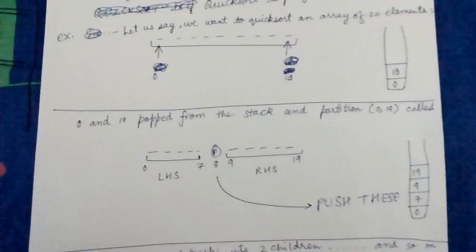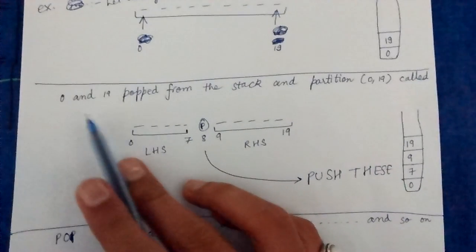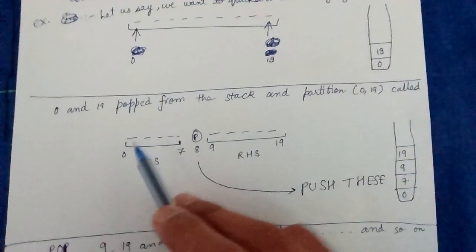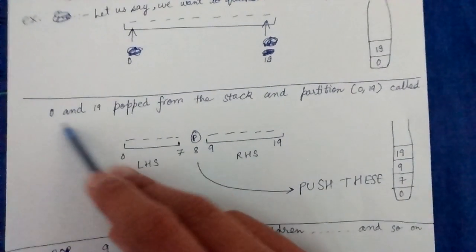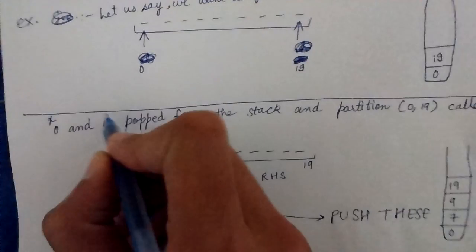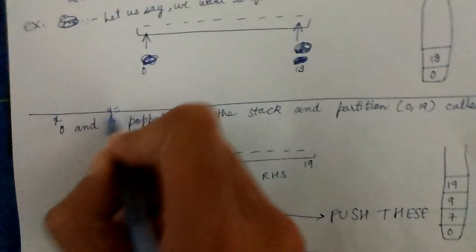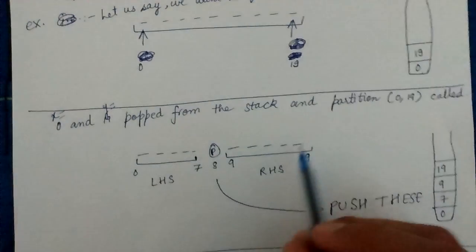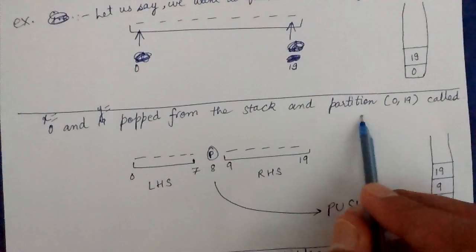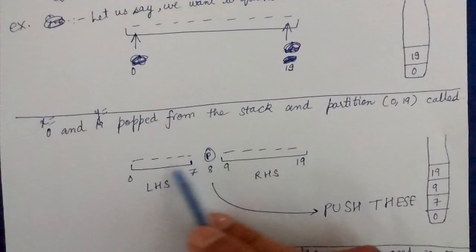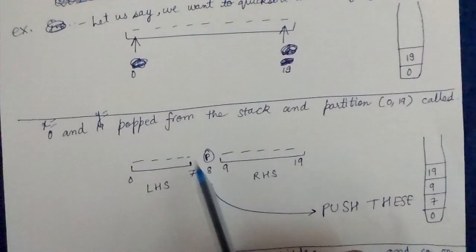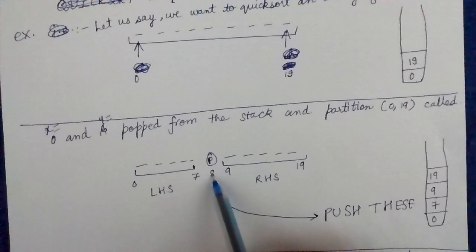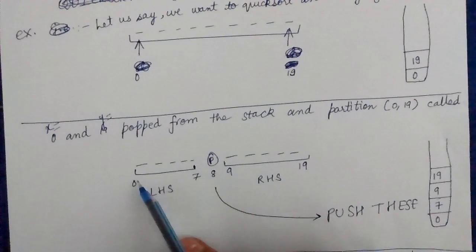We pop these 0 and 19. Let us call the first popped element X and the second element Y, so X equals 0, Y equals 19. Then we call partition(X, Y), that is partition(0, 19). We will obtain the result as LHS is 0 to 7 and RHS is 9 to 19.